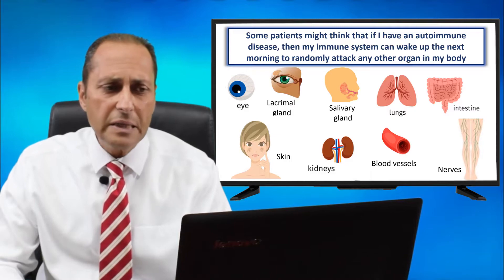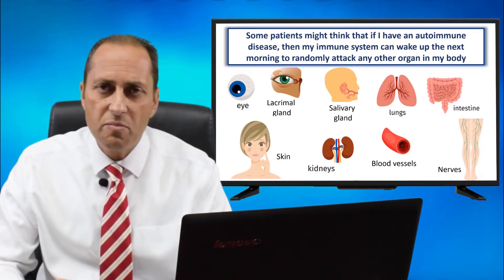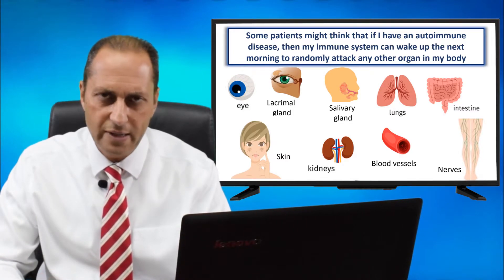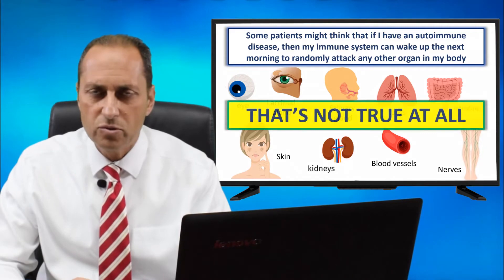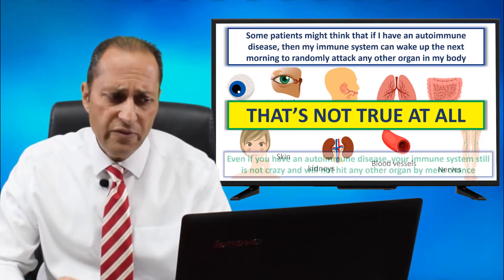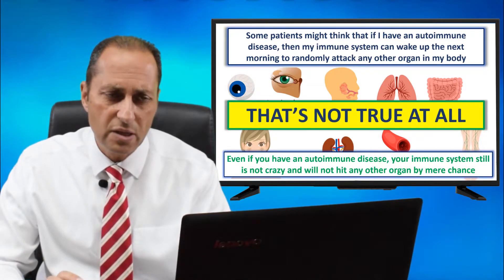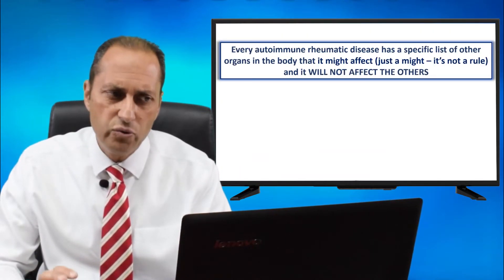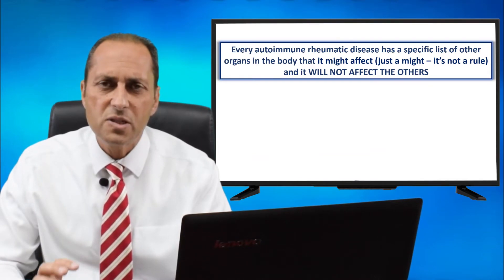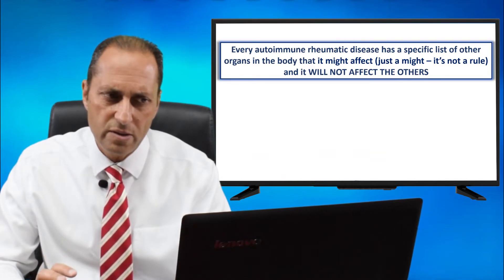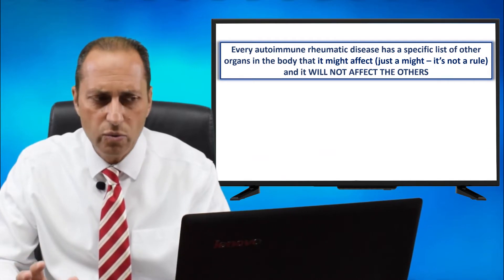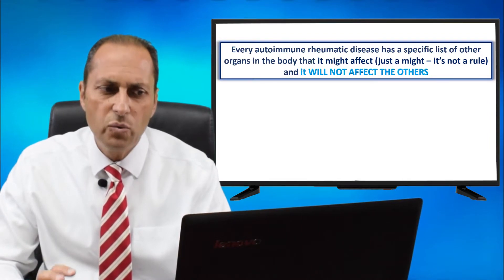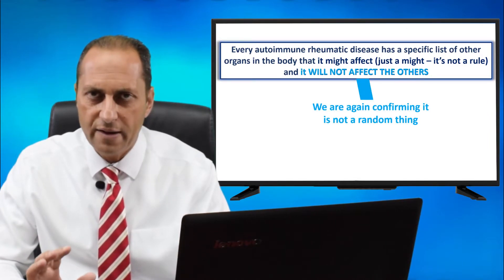Some patients might think: if I have an autoimmune disease, then my immune system can wake up the next morning to randomly affect any other organ in my body and attack it. That's not true at all. Even if you have an autoimmune disease, your immune system is not crazy and will not hit any other organ by mere chance. Every autoimmune rheumatic disease has a specific list of other organs it might affect — just a might, it's not a rule — and it will not affect the others, confirming it is not a random thing.